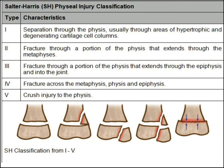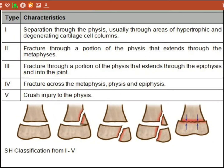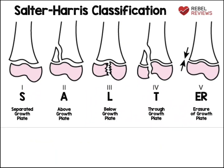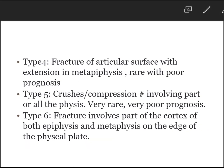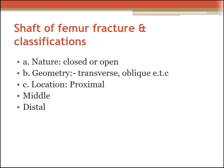This diagram shows the same Salter-Harris classification. As noted, there are actually six types, though the most commonly discussed classification covers five types. Next we have shaft of femur fracture classification.